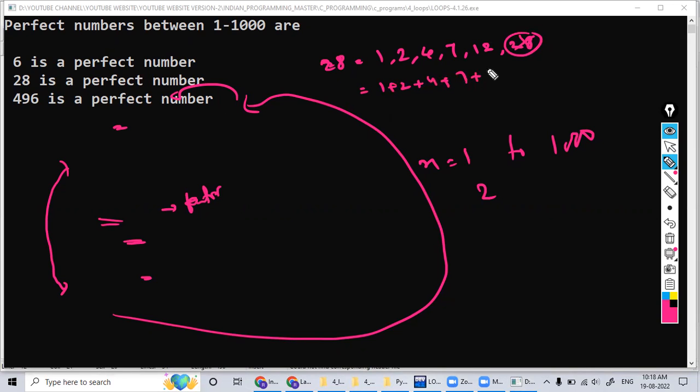Plus 2, 1... so sorry, this is 14. So 14 plus 14 equals 28. So 28 is also a perfect number, like that, 496.